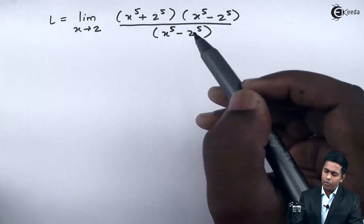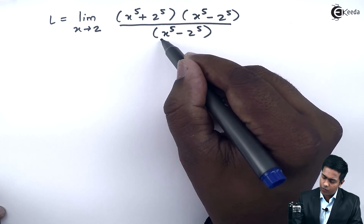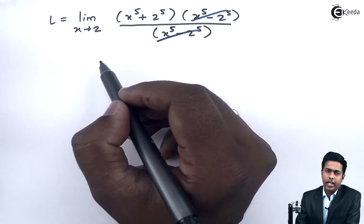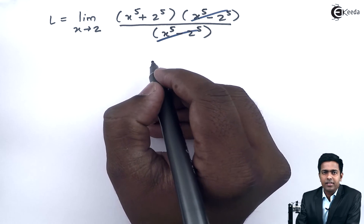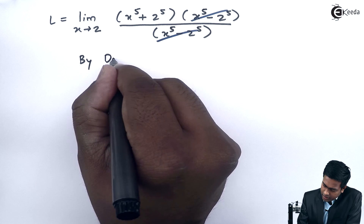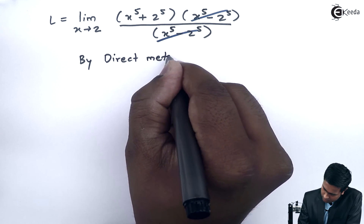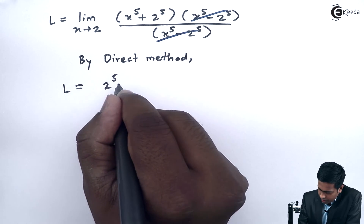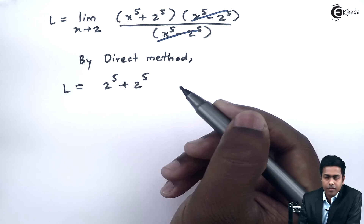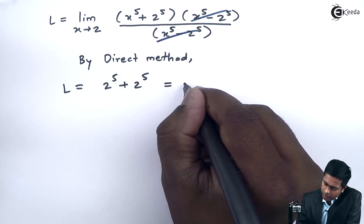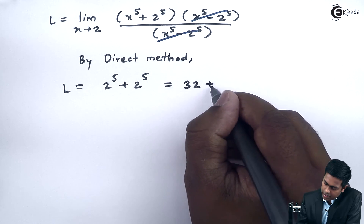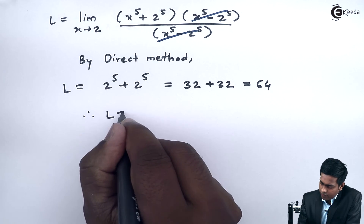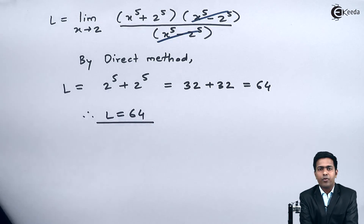From the numerator and denominator we can cancel x raised to 5 minus 2 raised to 5, and for the remaining term we apply the direct method again. Substituting x equals 2, we get 2 raised to 5 plus 2 raised to 5. Since 2 raised to 5 is 32, we get 32 plus 32, which gives the answer as 64. Therefore, the value of the limit is 64. Thank you.